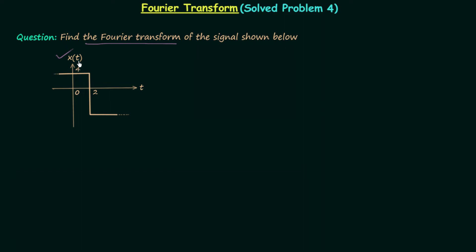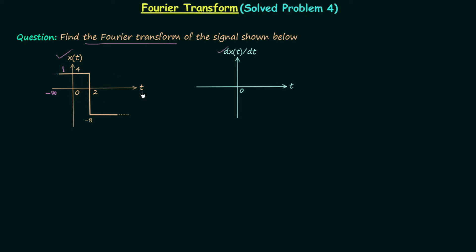So let's differentiate signal XT. Differentiating it will give us the signal DXT over DT, and here we are having three straight lines. The first line is from minus infinity to 2 — we are having this line which is parallel to the time axis, and therefore it makes zero degrees in the anti-clockwise direction from the time axis. So we can say the slope M is equal to tan(0°), or simply the slope is equal to zero.